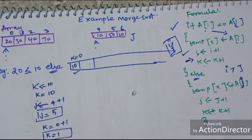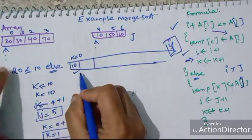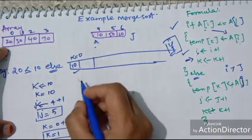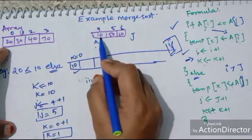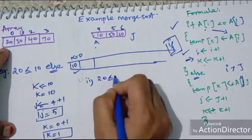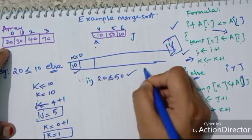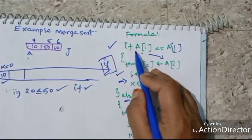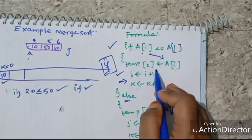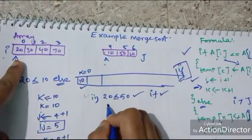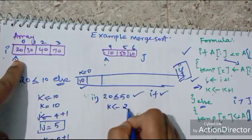The first condition is solved. Now the second condition: 20 is lesser than or equal to 50 — yes, it is. So the if part of the program is executed. K will be the I value.